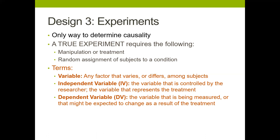If we were doing a study of a medicine, the independent variable would be the type of medicine received — whether it was the real medicine or the fake placebo. The dependent variable is the variable being measured that might be expected to change as a result of the treatment. So for a medicine study, the dependent variable would be whether the person recovered or whether the medicine did what we expected.